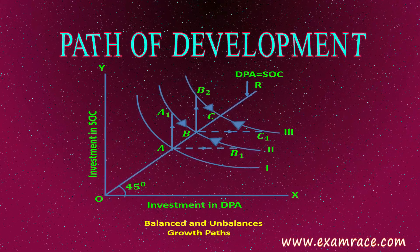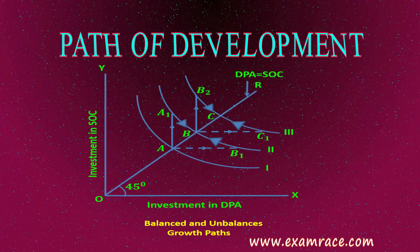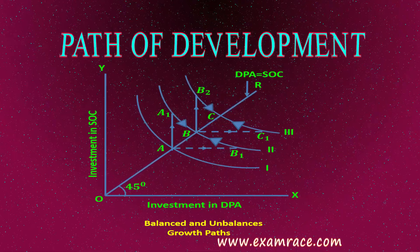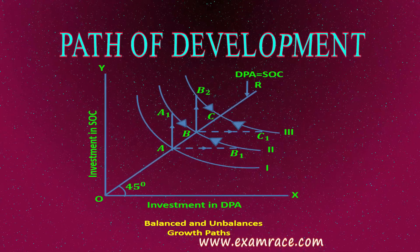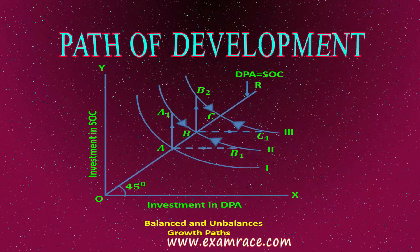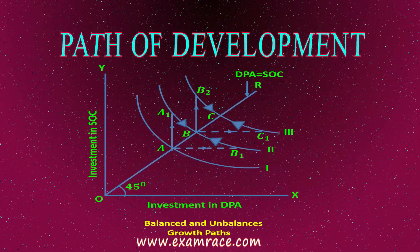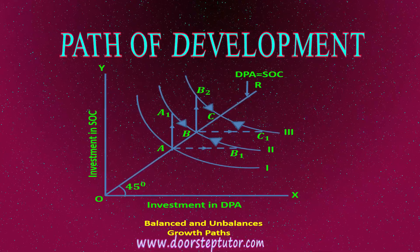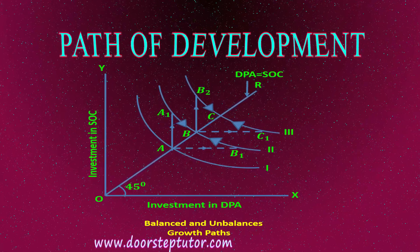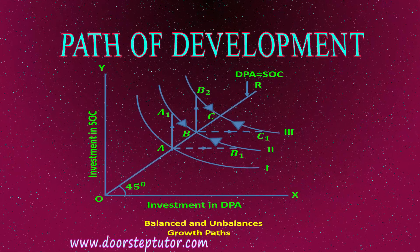The points A, B, and C are called the optimal points — these indicate the optimum combinations of investment in SOC and DPA. There are two parts of development: one is A→A1→B→B2→C, and the other is A→B1→B→C1→C. We have to determine the sequence of expansion which will maximize investment and output and accelerate development.